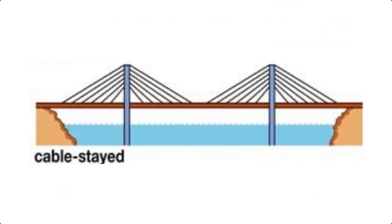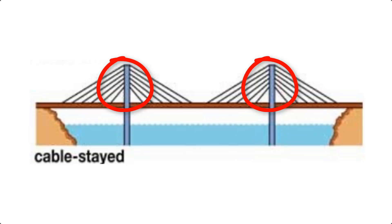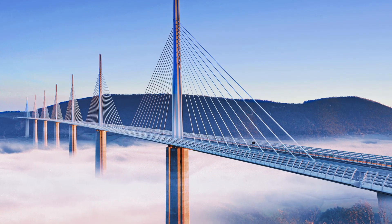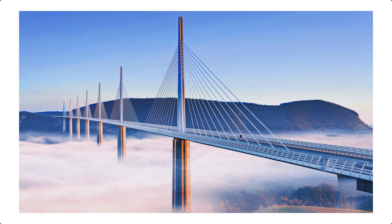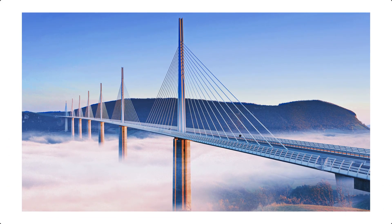Lastly, cable-stayed bridges. In this design, the cables are directly connected to towers, forming a series of straight lines. This configuration provides excellent structural efficiency, allowing for medium to long spans. Cable-stayed bridges are known for their modern appearance and are often used in urban environments.